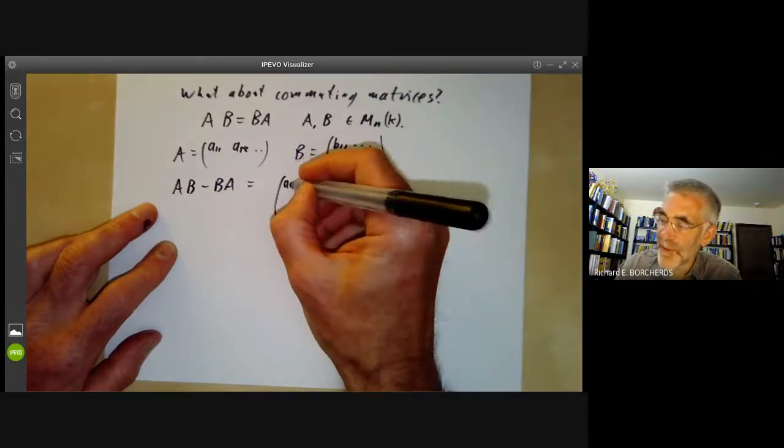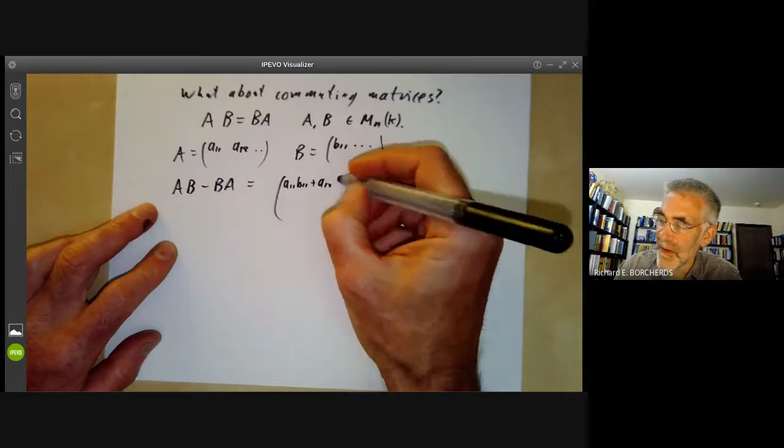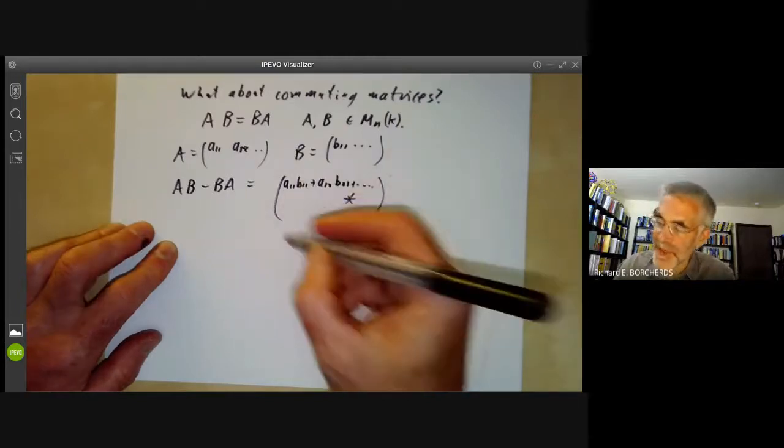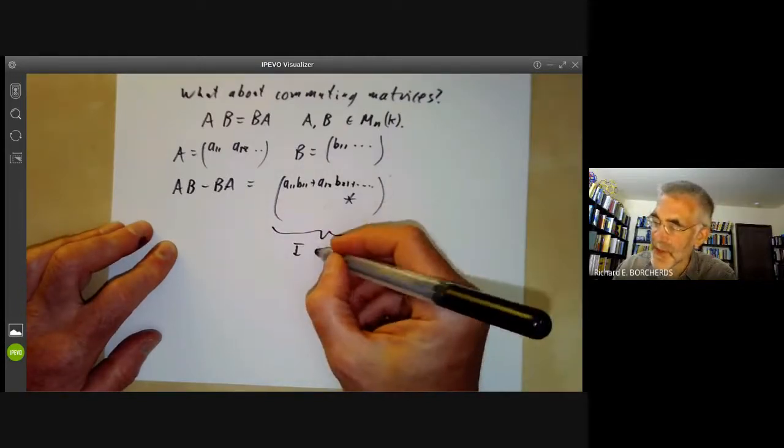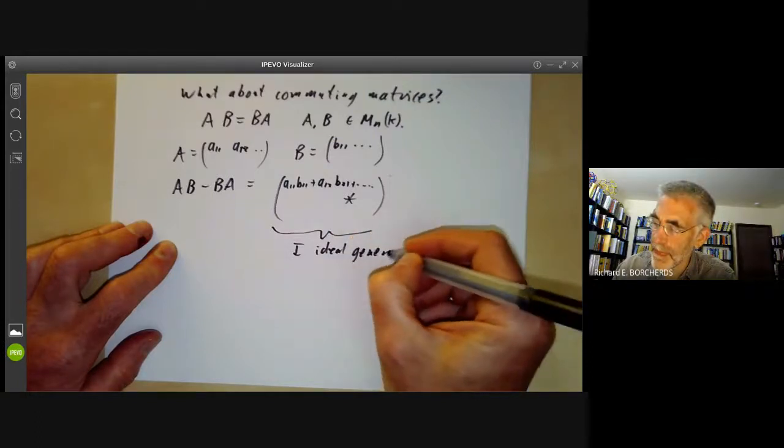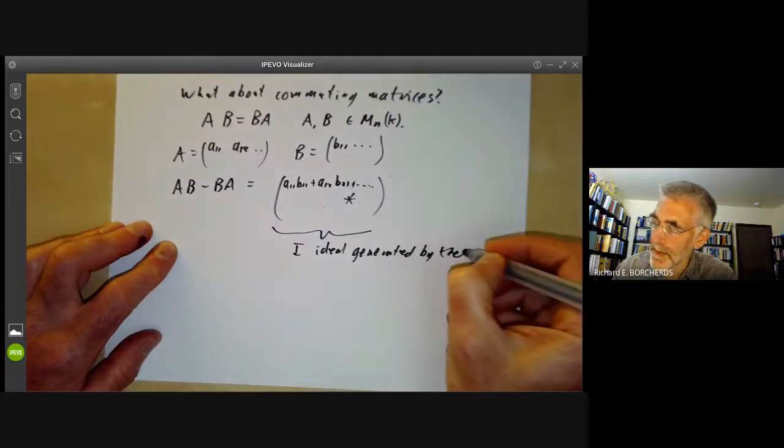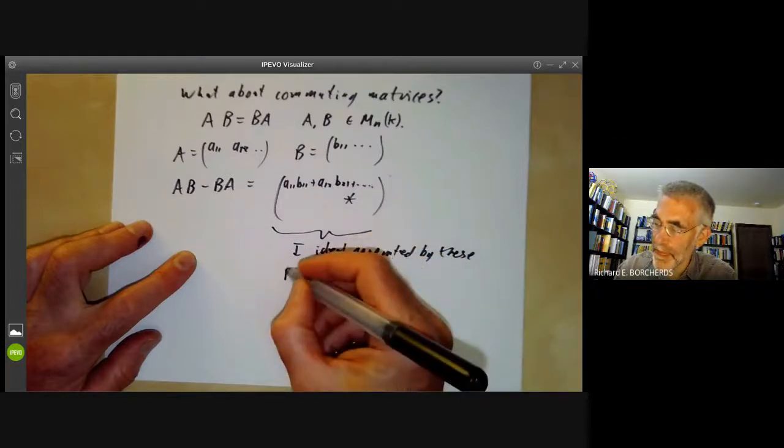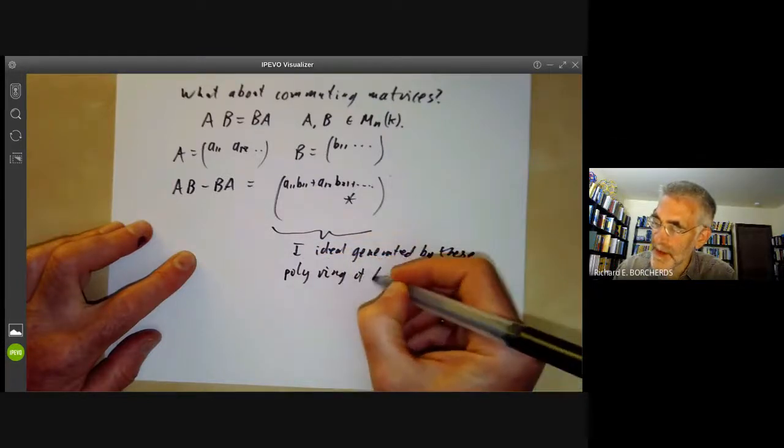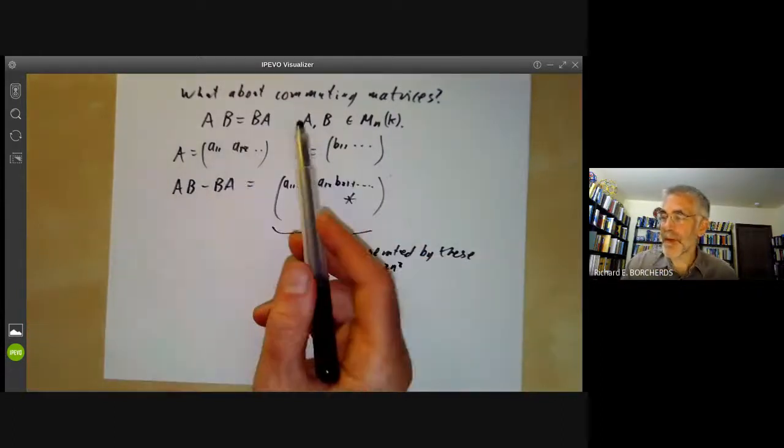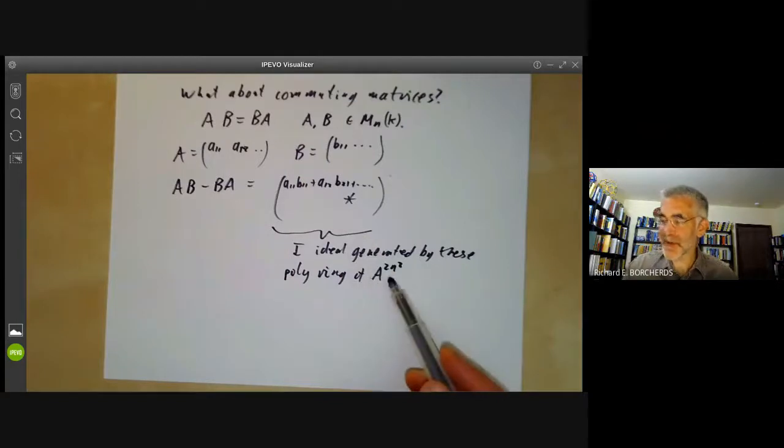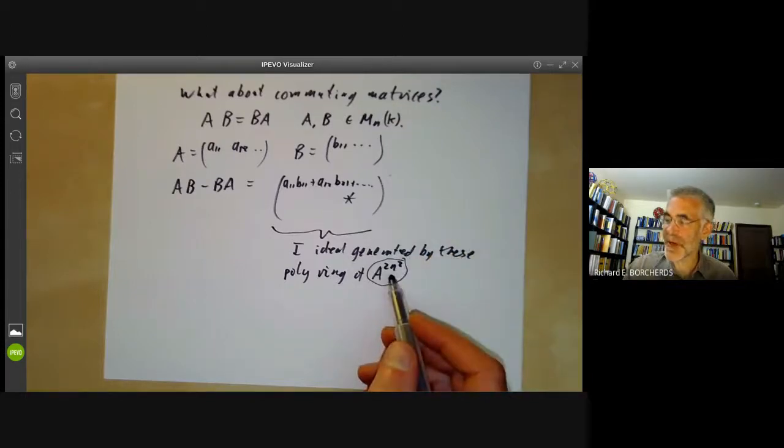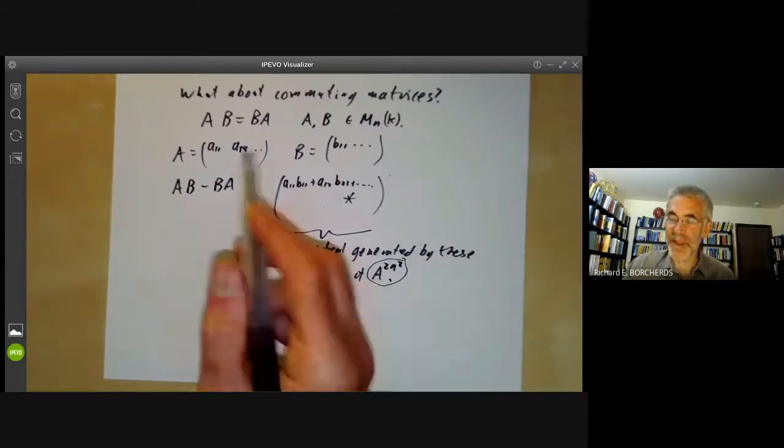And then AB minus BA will be equal to some big matrix here. So here we have A_11·B_11 plus A_12·B_21 plus something minus something. I mean, the coefficients are rather complicated messes. We're going to take i to be the ideal generated by these. So i is in the polynomial ring of A^(2n^2), because matrix A is given by something in n^2 dimensional affine space, and so is B. So here we've got affine space of dimension 2n^2, and we've got some ideal defining the subset of commuting matrices.